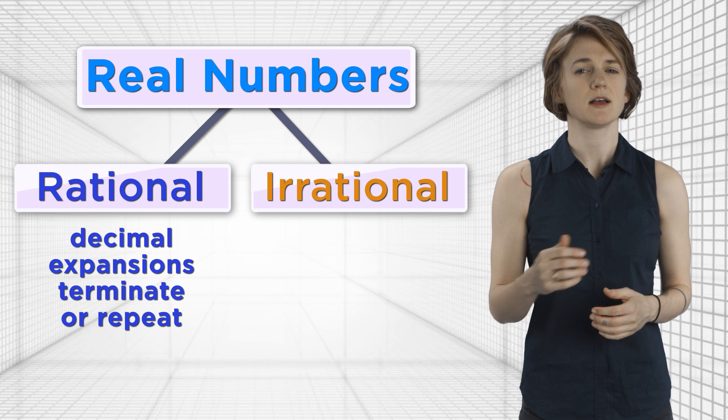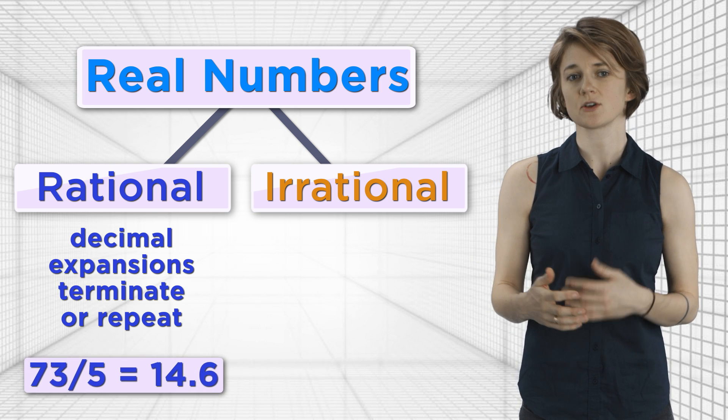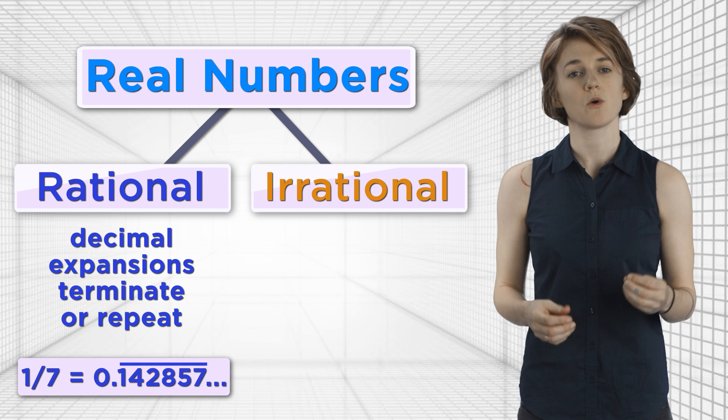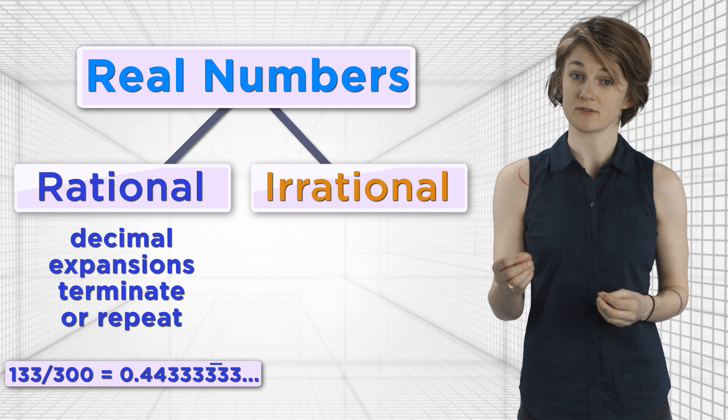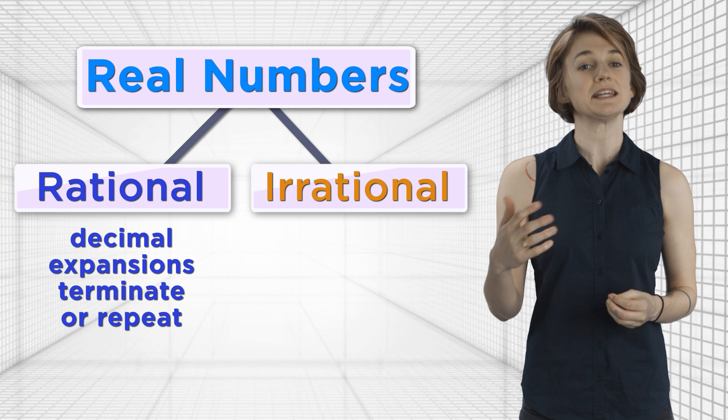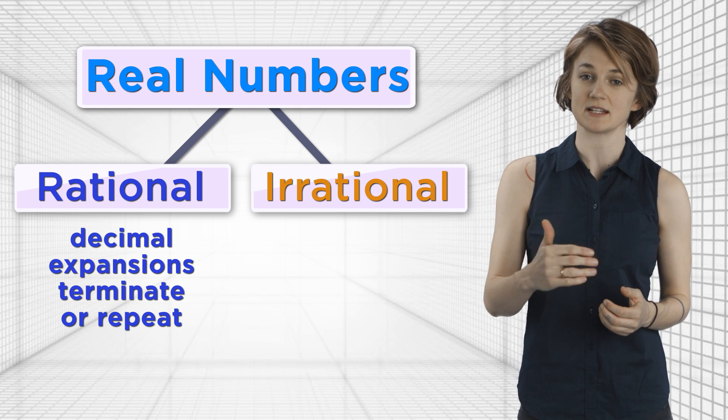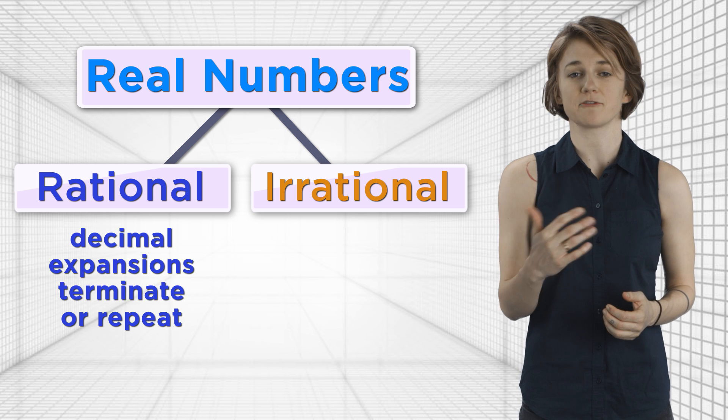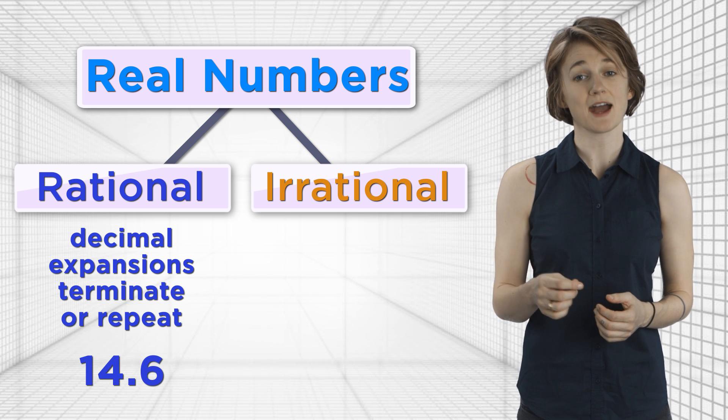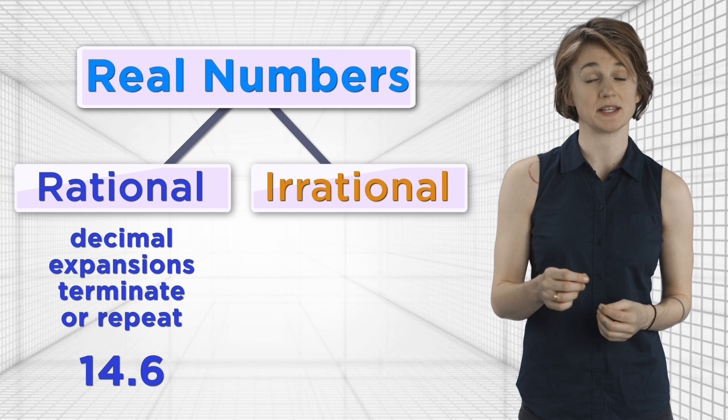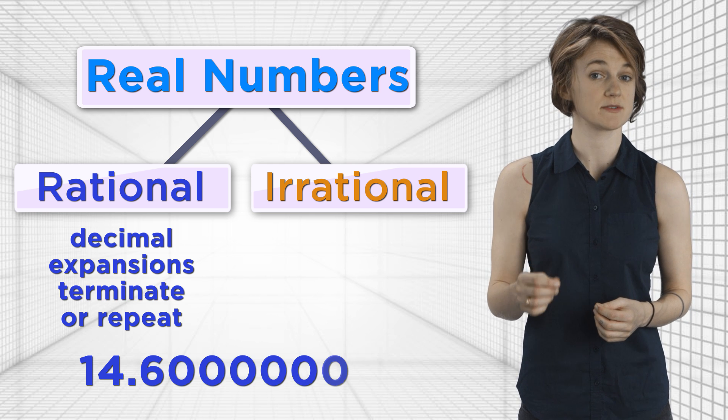An equivalent definition is that rational numbers are those whose decimal expansions terminate, or eventually repeat, like 14.6, or 0.142857 repeating, or 0.443333333. Even rational numbers that we think of as having terminating decimal expansions, like 14.6, actually have a repeating 0 if we write it as 14.6000000.